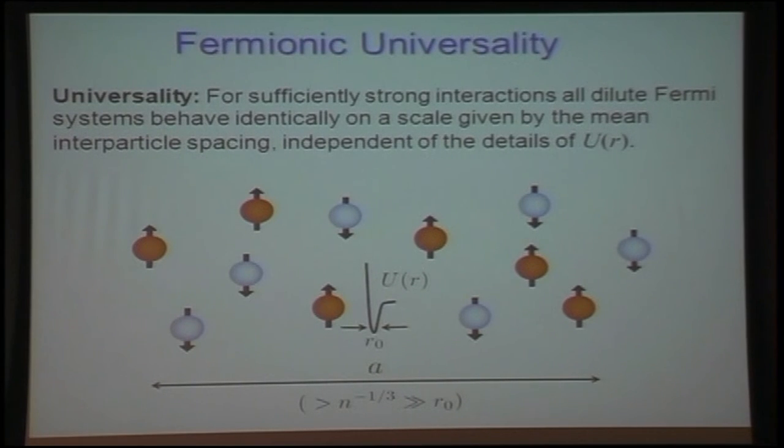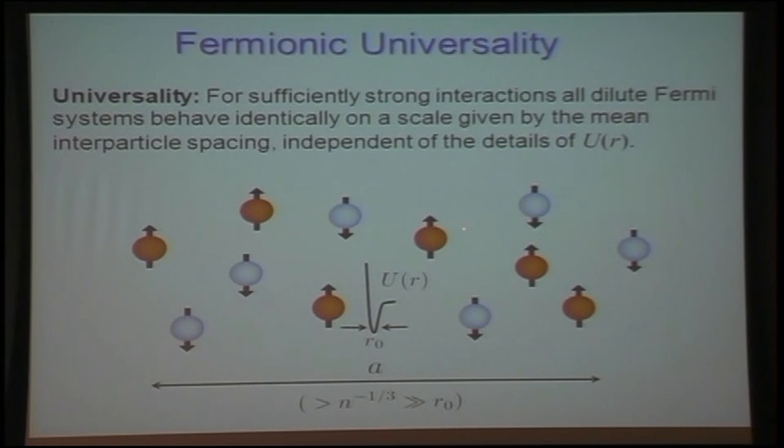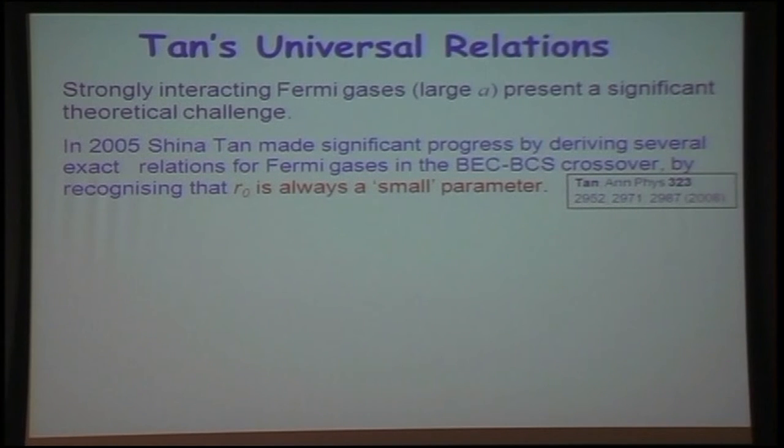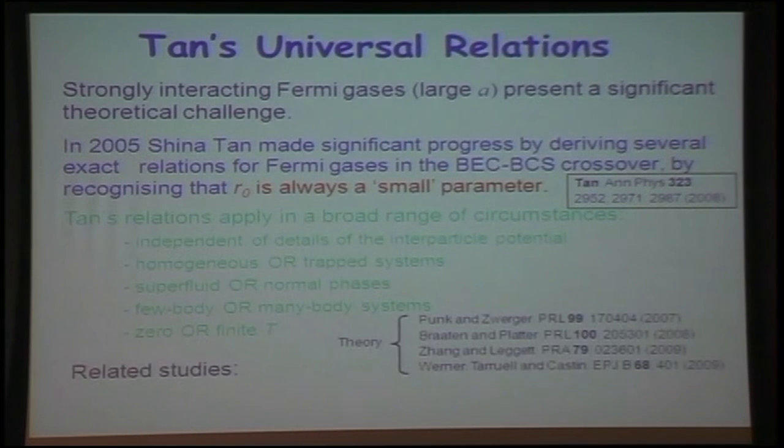Now I'd like to just talk a little bit about universality. Basically, for sufficiently strong interactions, all dilute Fermi systems behave identically on a scale given by the mean particle separation here, independent of the details of the potential, independent of, say, R naught, and for strongly interacting Fermi gases, determined mainly by, or almost entirely by the separation of the particles. Strongly interacting Fermi gases, traditionally, have been a theoretical challenge, a significant theoretical challenge. In 2005, TAN made significant progress by deriving several exact relations for Fermi gases in this crossover region, by recognizing that R naught is always a small parameter. These relations apply in a very broad range of circumstances.